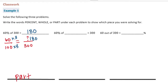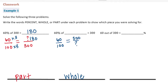The next one says 60% of what is equal to 300? So we have 60 out of 100, but we don't know the whole — the denominator. We don't know what we're finding out of. So 60% of something equals 300. We don't need to reduce because 60 times 5 is equal to 300, so 100 times 5 is 500. The whole here would be 500.